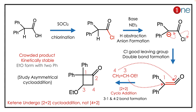You have ketene formation. Ketenes are very peculiar — they undergo [2+2] cycloaddition, not [4+2] cycloaddition. So the [2+2] cycloaddition leads to a four-membered cyclic ring with a ketone and phenyl group. The key concept to learn here is that ketenes undergo [2+2] cycloaddition, not [4+2] cycloaddition.